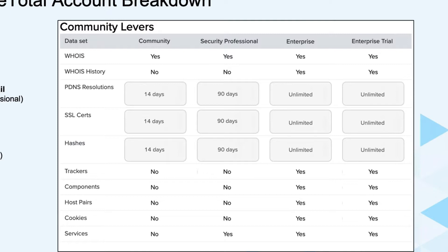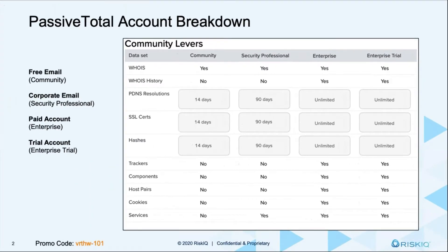If you have a corporate domain but still a free license, that would fall under Security Professional. What you get with that is a little bit more information: 90 days of PDNS resolutions, 90 days of certificates, as well as hashes. But you also get access to our services data set, which we'll talk more about here in a bit.